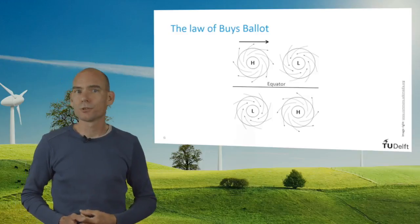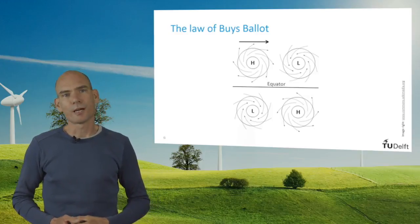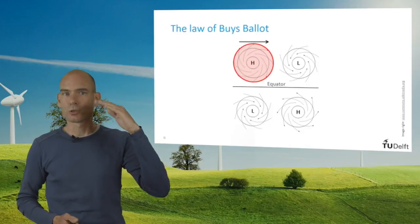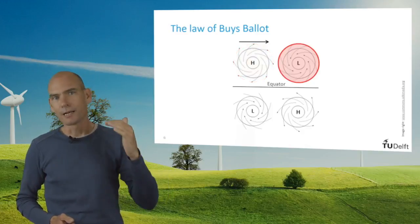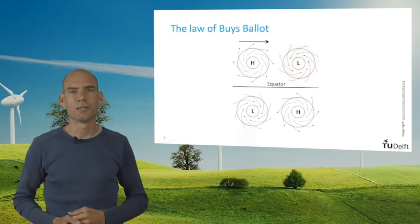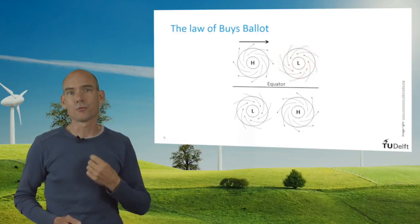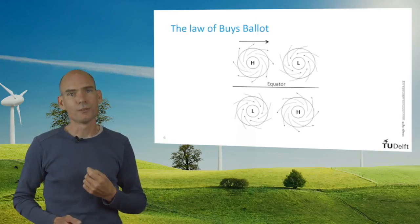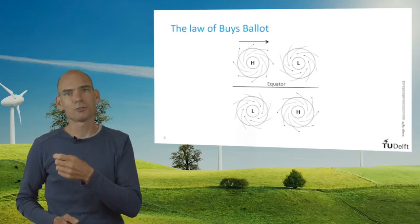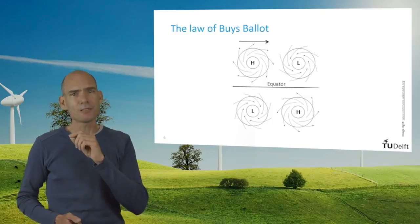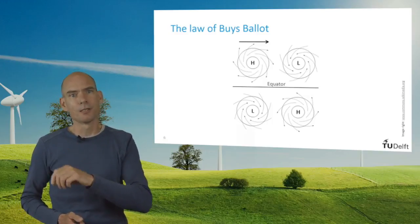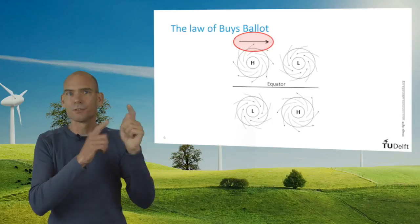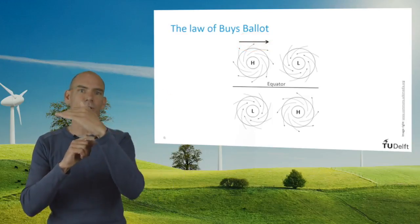If we were to look at the Coriolis force in more detail, we would find the law of Buys-Ballot. This law states that on the northern hemisphere wind turns clockwise around high pressure regions and counterclockwise around low pressure regions. This explains our pattern of westerly winds in northwest Europe. The upper two circles show the patterns of wind around high and low pressure regions on the northern hemisphere. Imagine the low pressure region on the right to be north of the high pressure region — the wind will then move from left to right between the two pressure regions, so in a westerly direction.